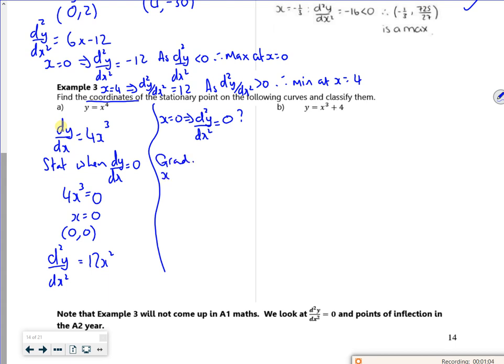Let's look at the gradient for x is minus 1. So dy by dx would be 4 times minus 1 cubed, so that's minus 4. Then let's look at 1. So dy by dx would be 4 times 1 cubed, which would be 4. So it's gone negative, 0, positive, so it must be a minimum.